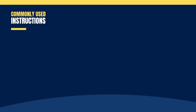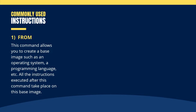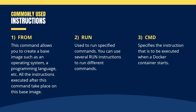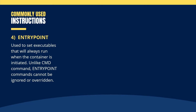Next let's see some commonly used instructions in Dockerfiles. First, FROM — this command allows you to create a base image such as an operating system or a programming language. The instructions executed after this command take place on this base image. Second, RUN — used to run specified commands; you can use several RUN instructions to run different commands. Third, CMD — specifies the instruction to be executed when a Docker container starts. Fourth, ENTRYPOINT — used to set executables that will always run when the container is initiated; unlike CMD, ENTRYPOINT commands cannot be ignored or overwritten.